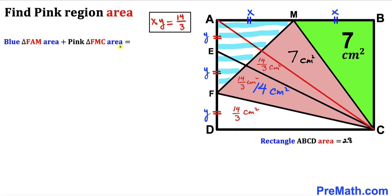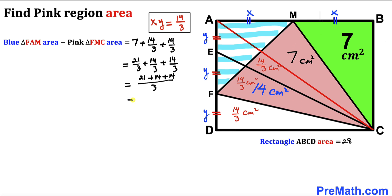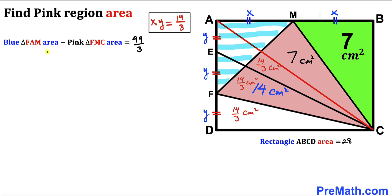The combined area of blue triangle FAM and pink triangle FMC equals the sum of the three individual triangle areas plus 7: that is 14/3 + 14/3 + 14/3 + 7. Computing this gives 49/3 cm² as the combined area of triangles FAM and FMC.